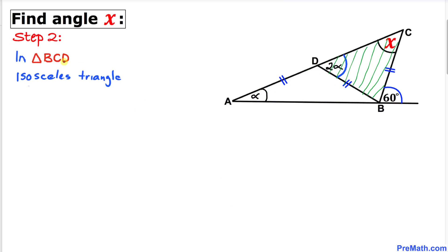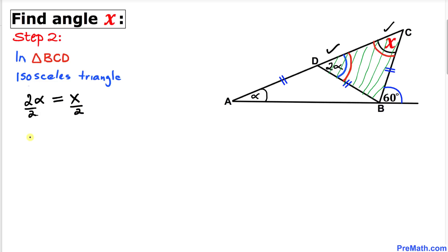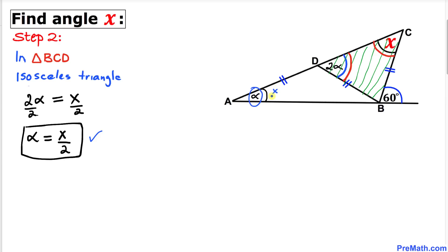Now let's focus on triangle BCD. We can see this is an isosceles triangle since this side length equals this side length. So therefore angle X equals angle 2 alpha. Equating these two angles, we get 2 alpha equals X. Dividing both sides by 2, alpha turns out to be X over 2.